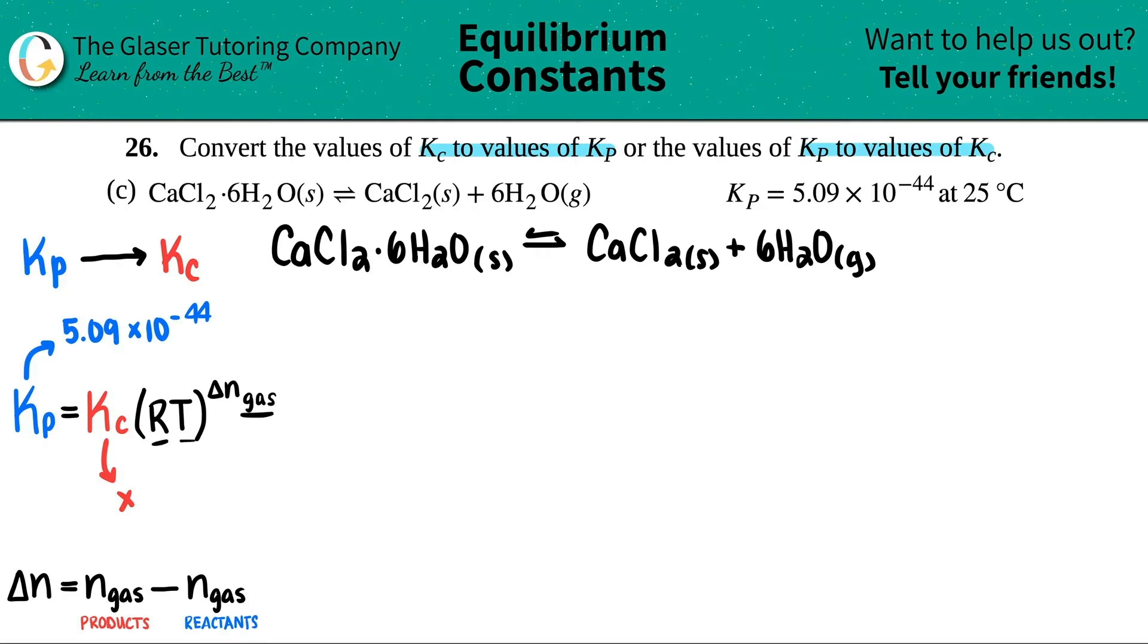But now comes the RT and the delta n gas. R is a universal gas constant. For this formula, it's always going to be 0.0821. So you just got to memorize that. That will never change for this formula. T is temperature, but it's in Kelvin. Here they gave us the temperature in Celsius. So I have to convert that Celsius temperature into Kelvin. From Celsius to Kelvin, all I do is just plus 273. So 25 plus 273 is 298. So that's the number that I'm going to use here, 298.